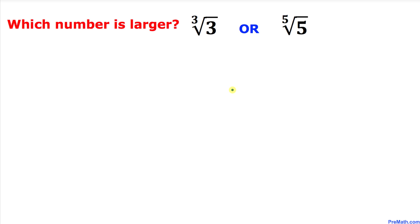Welcome to pre-math. In this video tutorial we have got these two numbers, one of them is cube root of three and the other one is fifth root of five. Here's the question: which number is larger, either cube root of three or fifth root of five? So let's go ahead and get started with the solution.